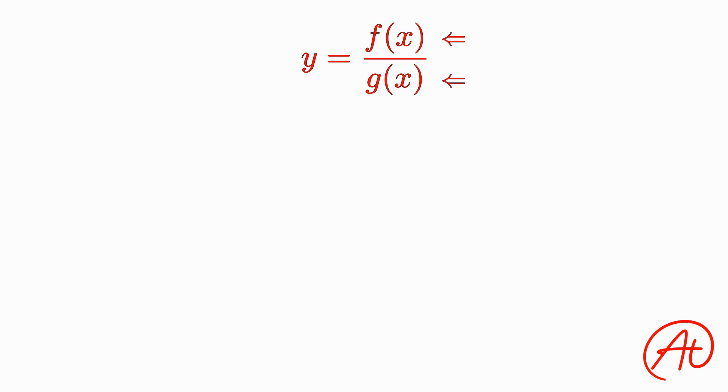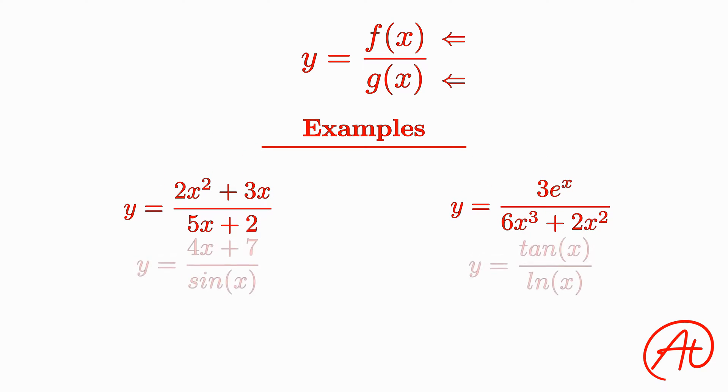This can be written symbolically as f divided by g, as seen here. This may be a bit confusing, so here are some examples of equations where you would have to use the Quotient Rule to find their derivatives. You can see that in each of these cases, there is one function being divided by another function.